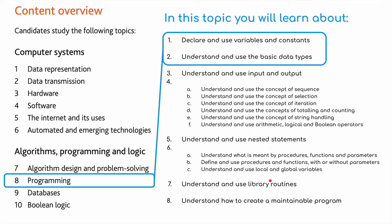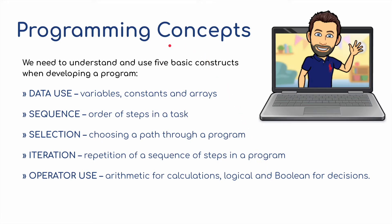This is a big topic. First of all, programming concepts. We need to understand and use five basic constructs when developing a program. The data that's used: variables, constants, and arrays. We need to understand sequence, which is an order of steps in a task. Selection, choosing a path through a program. Iteration, the repetition of a sequence of steps in a program. And operators used: arithmetic for calculations, logical and boolean for decisions to be made.